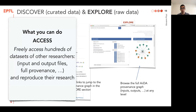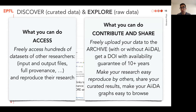So what do these three sections allow you to do? There are two aspects. If you want to access the data, you can get free access to hundreds of datasets of other researchers, which allow you to reproduce the research. These include inputs and output files, the full provenance in many cases, or any information and potentially the scripts that allow you to reproduce the research. In addition, if you want to contribute and share your research, you can freely upload your data in the Archive — even if you didn't use AIDA. You will get a DOI, and we guarantee that your data will be available for at least 10 years, complying with many requirements of funding agencies.